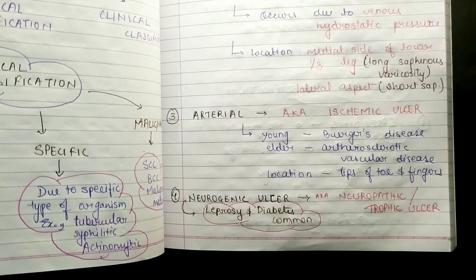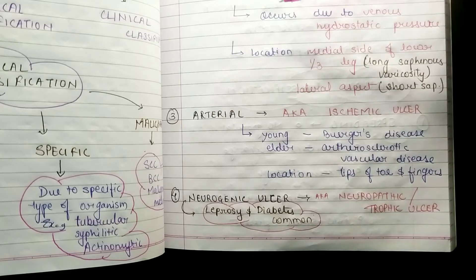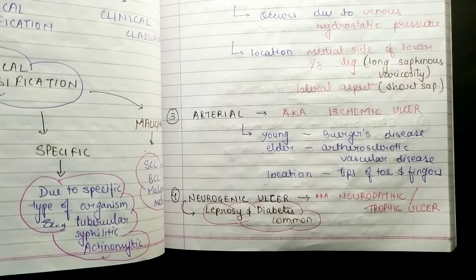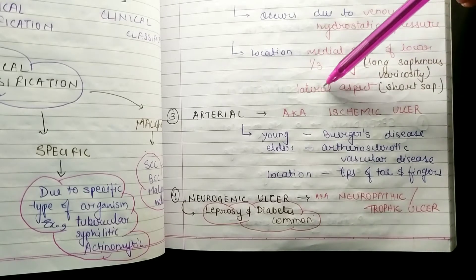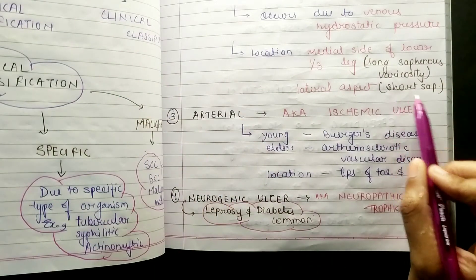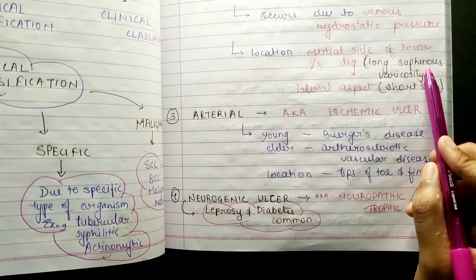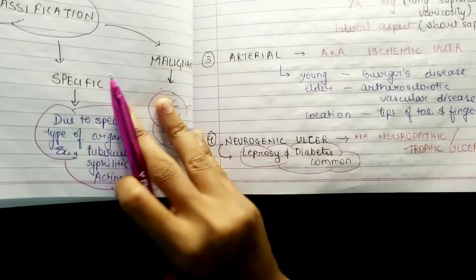The second type is venous ulcer, which is also a common one. It includes varicose ulcer and post-thrombotic ulcer. It occurs due to venous hydrostatic pressure. Its location is the medial side of the lower one-third of the leg due to long saphenous varicosity, and if it occurs on the lateral aspect, it is due to short saphenous varicosity.